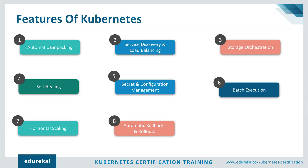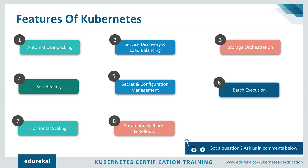Kubernetes restarts containers that fail, and replaces and reschedules containers when a node dies. It kills containers that do not respond to user-defined health checks and doesn't advertise them to clients until they are ready to serve. It also deploys and updates secrets and application configurations without rebuilding your image and without exposing secrets in your stack configurations. Kubernetes can manage batch and CI workloads, progressively rolling out changes while monitoring application health. If something goes wrong, Kubernetes will roll back the change for you.